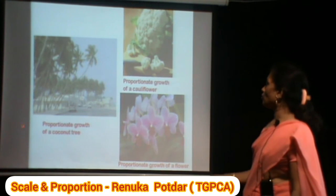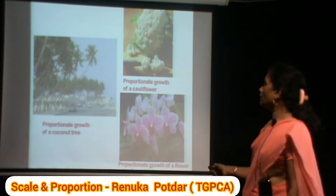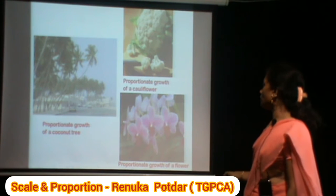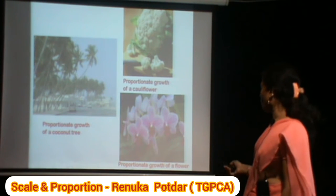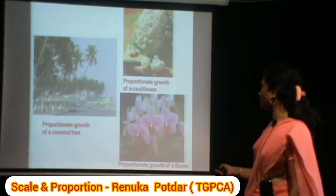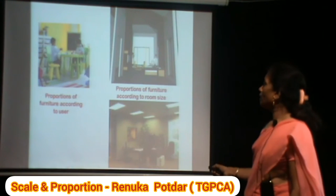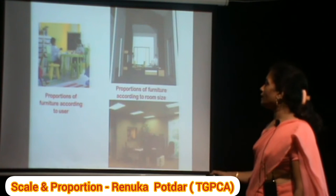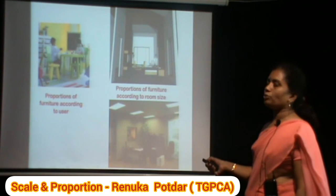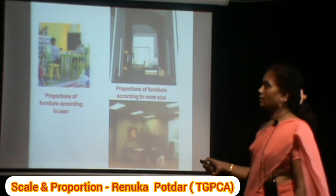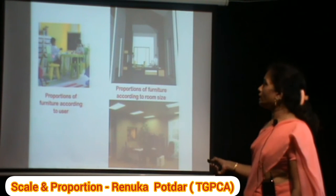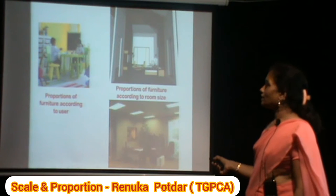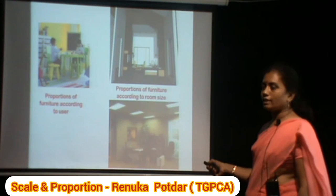Other natural examples include the proportion of growth in coconut trees and the proportion of flowers. Proportion also applies to furniture according to the users — a smaller child requires smaller furniture, while a larger child requires larger furniture.